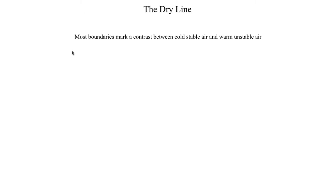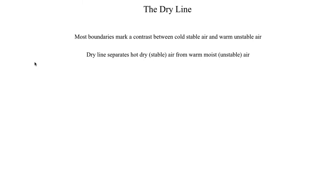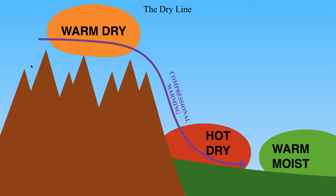The first boundary we're going to talk about is the dry line. If you've lived in the plains for any length of time, you've probably heard this mentioned at least once. Unlike a cold front, which separates cold dry air from warm moist air, the dry line separates hot dry air from warm moist unstable air. The dry line has a lot of unique behaviors that a cold front doesn't have, and we're going to cover that during this segment.